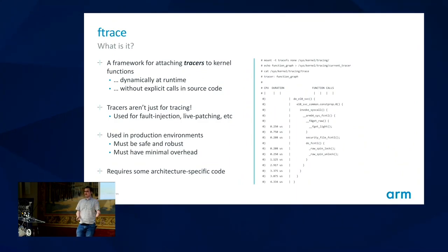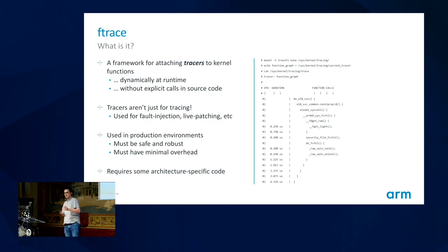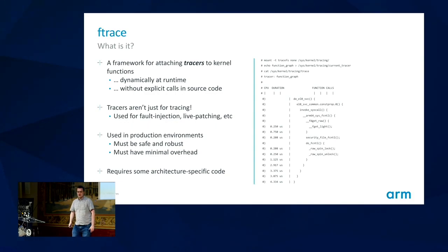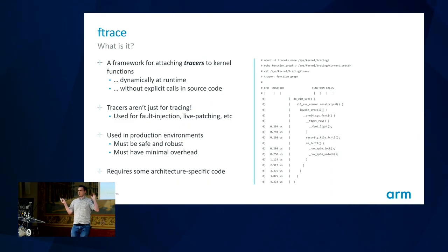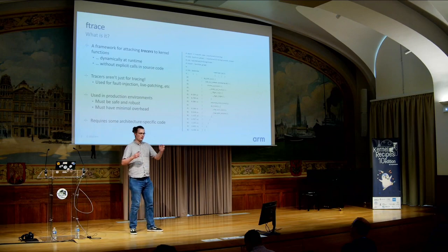Despite the name, FTrace isn't just about tracing. FTrace is all about hooking functions and attaching tracers, and those tracers can do whatever you need. For example, fault injection — where we hook certain functions and change the way they behave, returning an error code. And live patching — where you hook a function and replace it with a newer version. FTrace is used for all these things in production, so it's absolutely critical that it doesn't crash the kernel, doesn't break the customer's workload, and has minimal overhead.